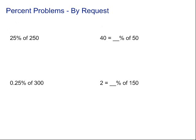Let's take a look at some percent problems by request. Let's start over here. We've got 25% of 250. If we want to find that, we need to remember of means the operation multiplication. So to find 25% of 250, we can use the fact that of suggests multiplication.